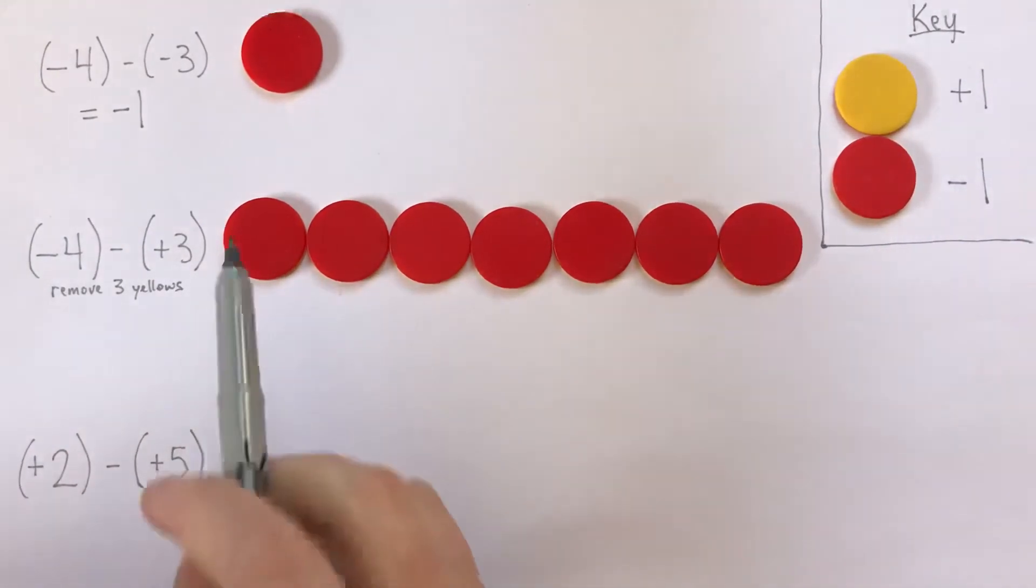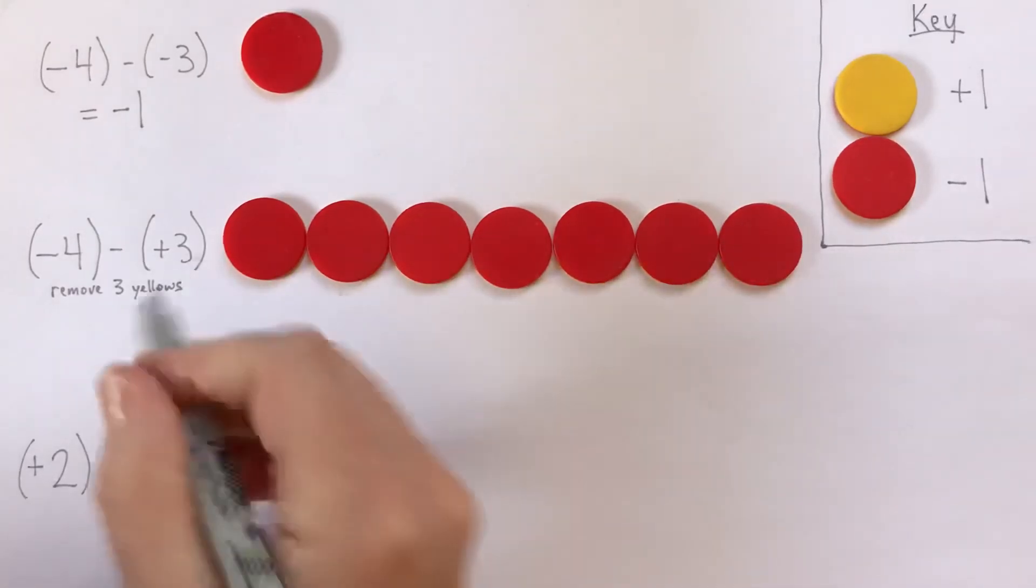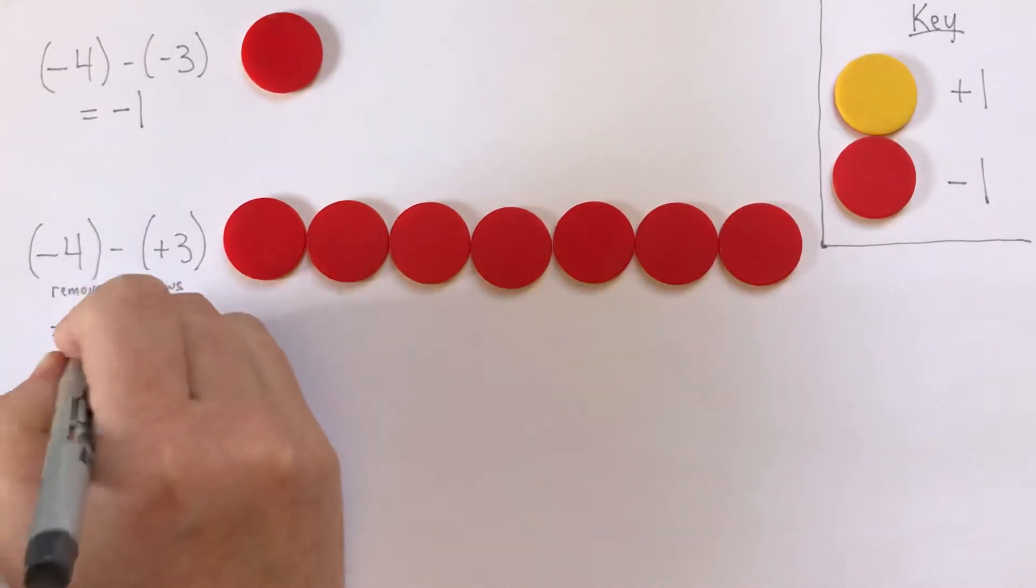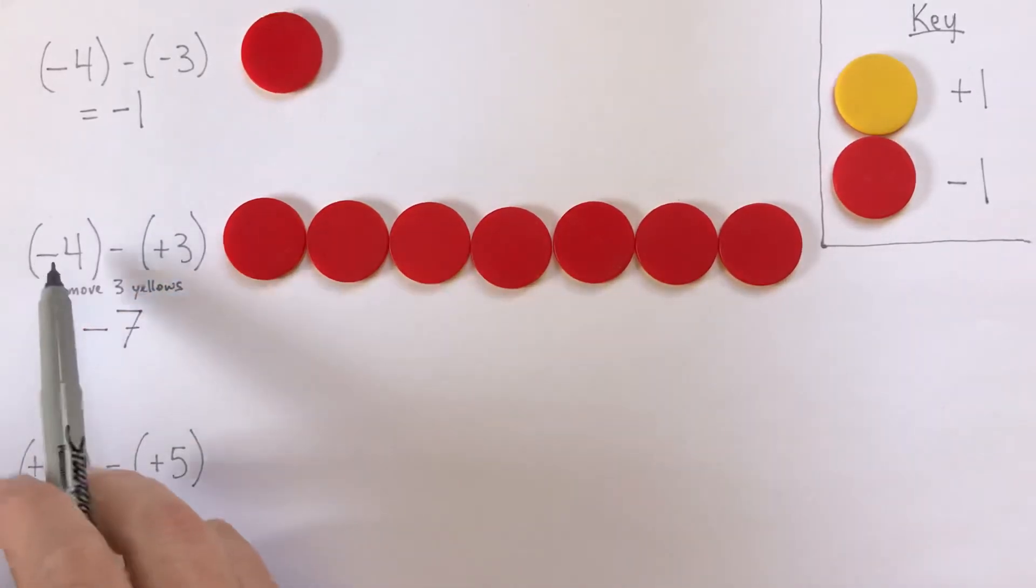So our answer is negative 1, 2, 3, 4, 5, 6, 7. Negative 7. So negative 4 subtract positive 3 is negative 7.